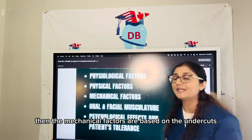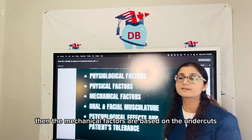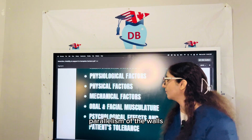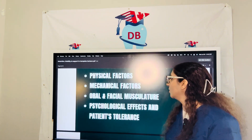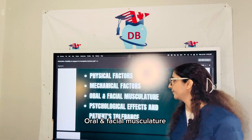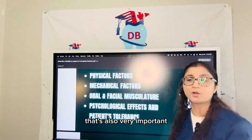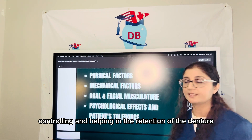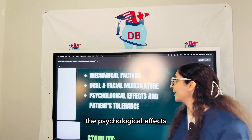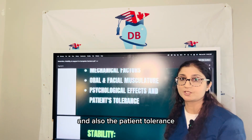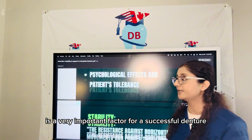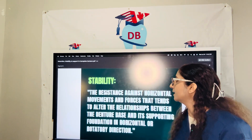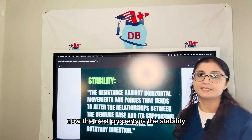Mechanical factors are based on undercuts or the parallelism of the walls. Oral and facial musculature is also very important — how the musculature is controlling and helping in the retention of the denture. The psychological effects and patient tolerance are also very important factors for a successful denture. The next property is stability.